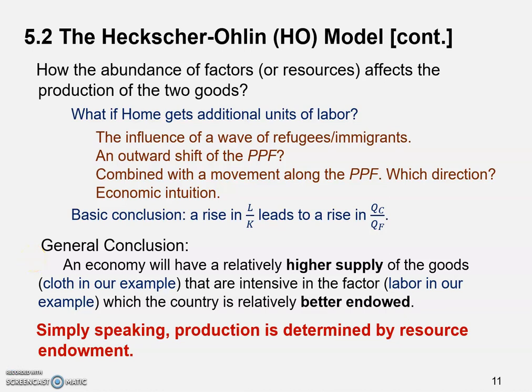Let's stop for a moment and look back at what we already learned from the HO model. The general conclusion says an economy will have a relatively higher supply of the goods that are intensive in a factor which the country is relatively better endowed. In other words, you can produce more goods by using the factors that the economy has more of. That's why we said production is determined by resource endowment.